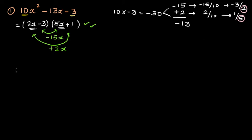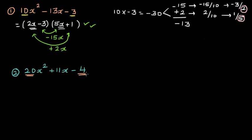Let's do a slightly more difficult question. Question 2: 20x squared plus 11x minus 4. The same process — multiply the coefficient of x squared and the constant, which gives minus 80. Now find two factors which add to give you plus 11.